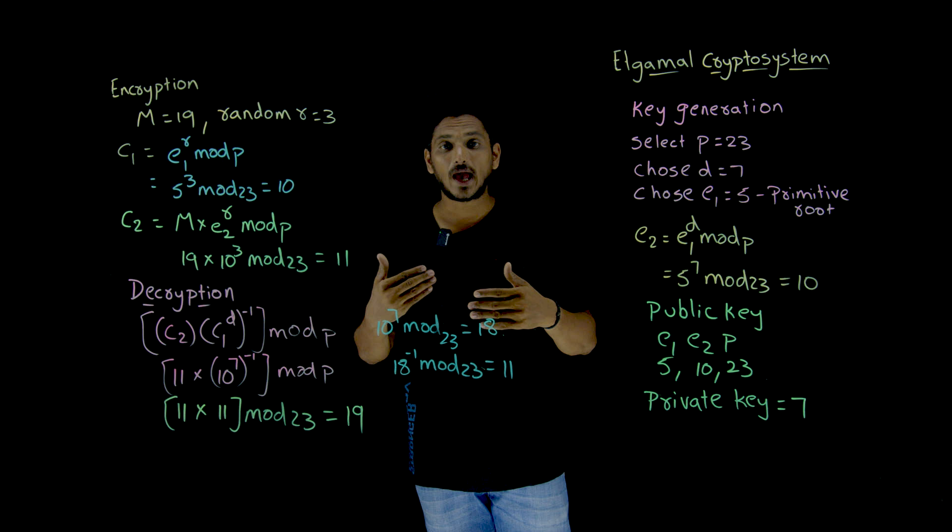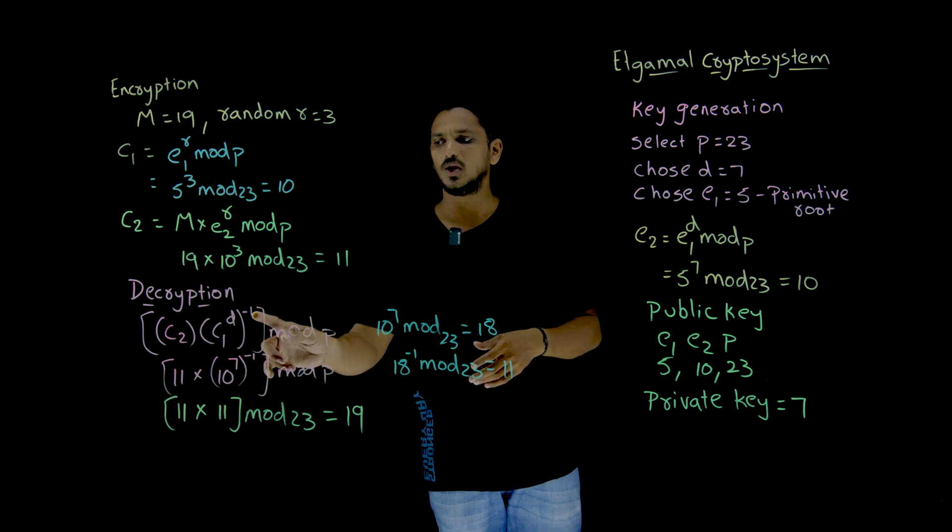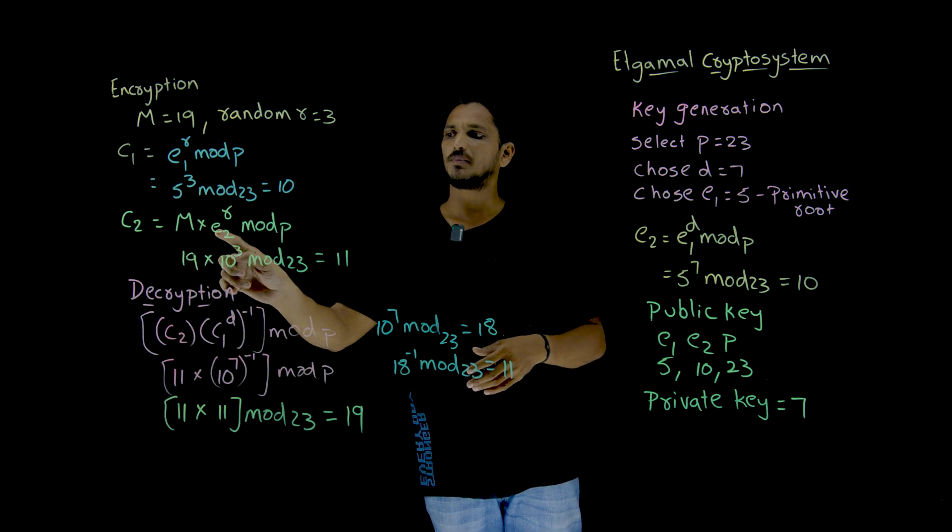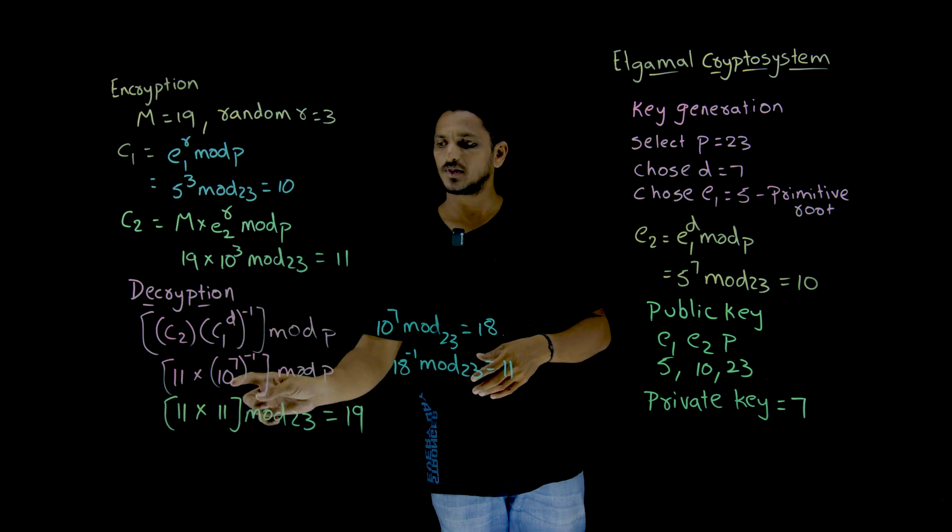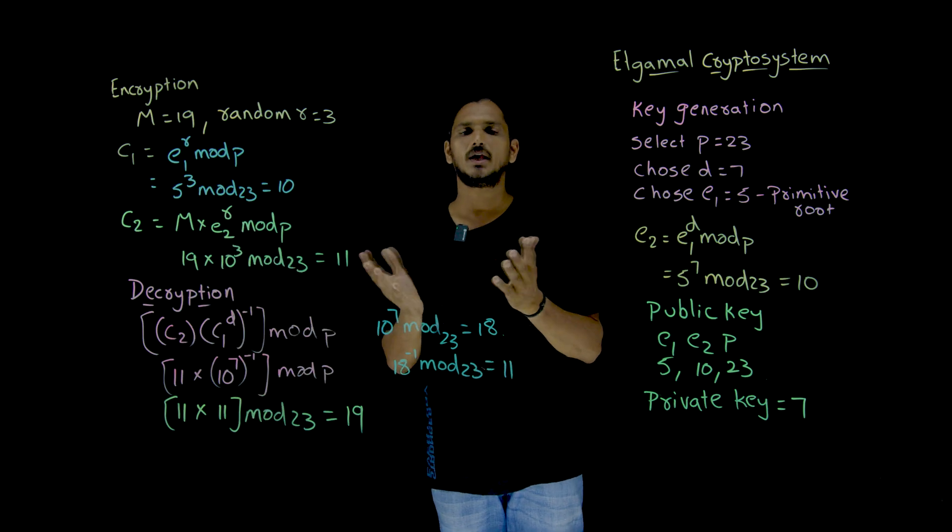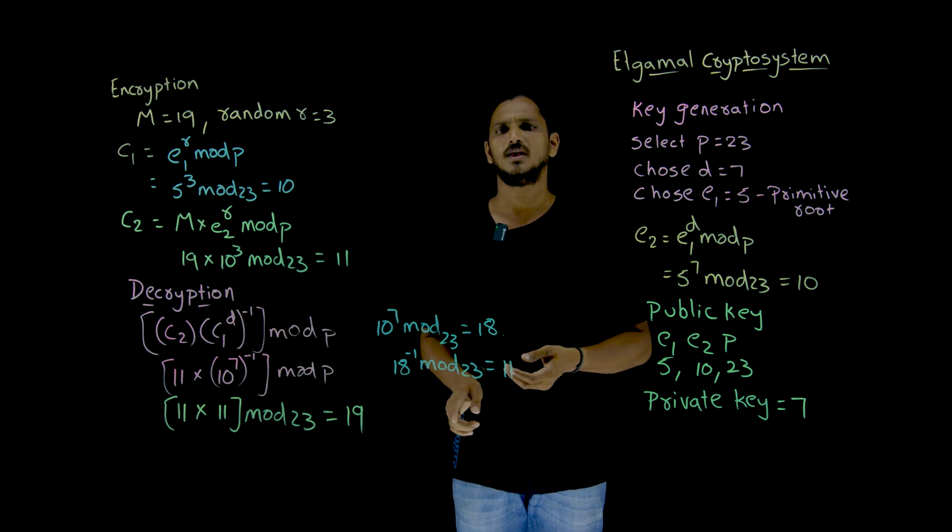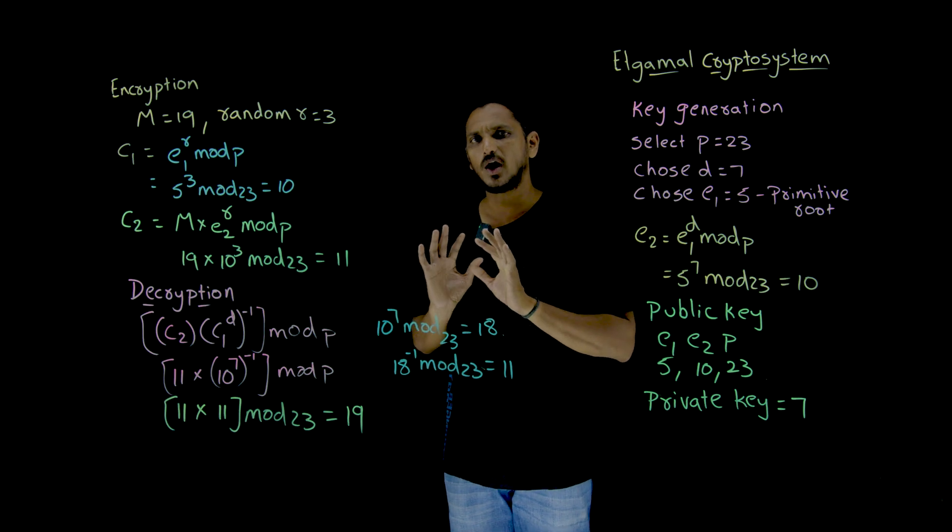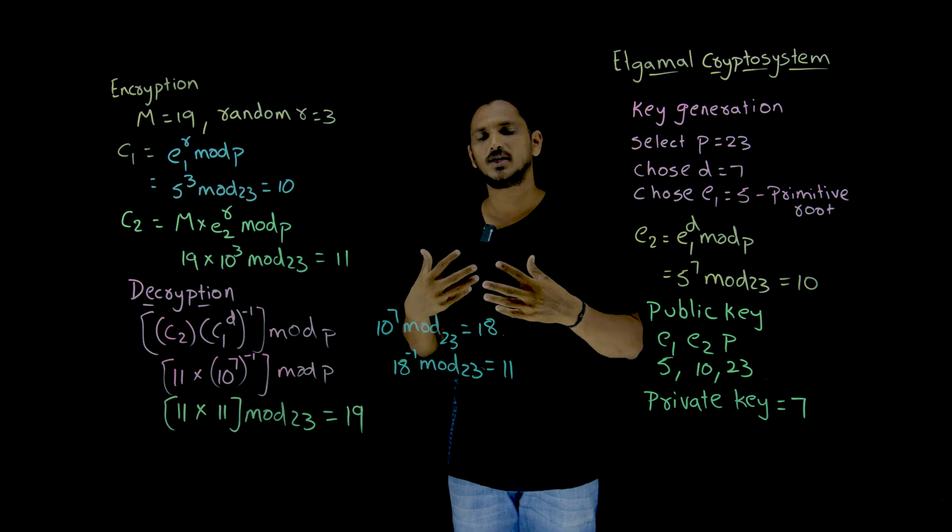This is what happens in ElGamal system. So C1 power D whole inverse. The actual mask is happened here. C2. Inside C2 means M multiplied by E2 power R. E2 means E1 power R D. E1 power R D, E1 power R D cancelled out. Because here we are using E1 power R D inverse. We already discussed this concept in our last class. That is why we have not written E1 power R D and all those things. Just for understanding, we are explaining it.